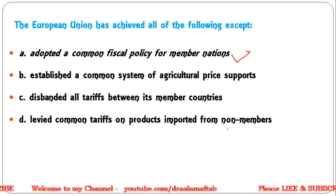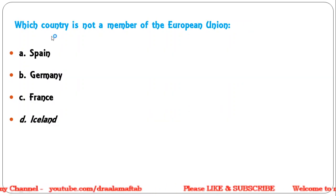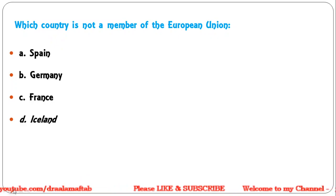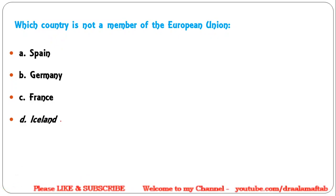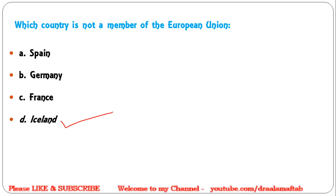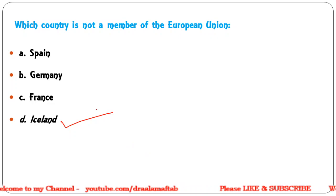Next: Which country is not a member of the European Union — Spain; Germany; France; Iceland? Correct answer is Iceland — Iceland is not a member of the EU. Spain, Germany, and France are among the 27 EU member countries.